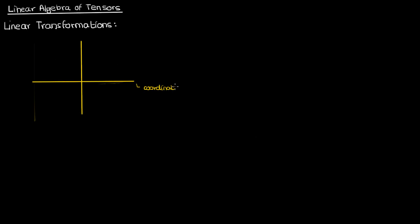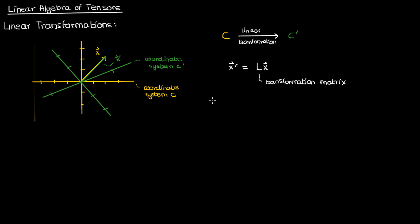Suppose I had a vector x in a coordinate system C that looked like this. If my coordinate system C was transformed to another coordinate system C prime and if this transformation was performed by a linear transformation, then how would the vector x appear in the new coordinate system? Well, this is how it would appear in C prime as the vector x prime which equals a matrix L times the original vector x in the coordinate system C. The matrix L is called the transformation matrix and in general we can use a matrix to represent linear transformations.